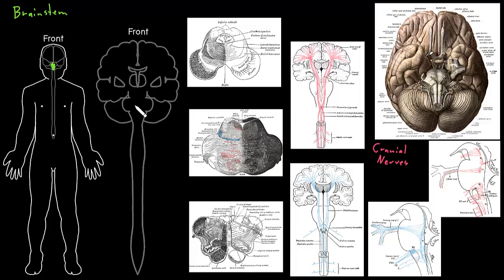Because the brain stem is connecting all these other parts of the nervous system together, its anatomy is complex. There's a lot going on in the brain stem. Even though it's a fairly small structure, it does a lot of things. Let's take a look at some sections to look inside the brain stem.